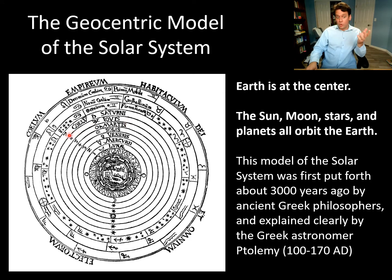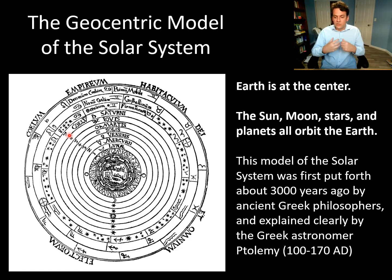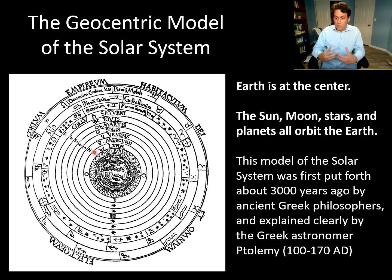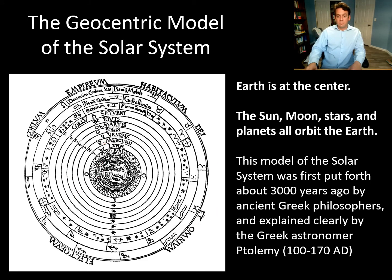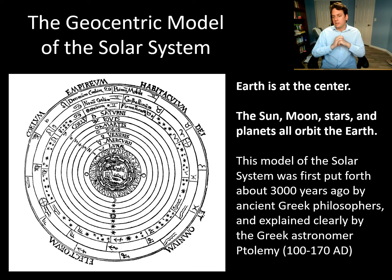A lot of thought went into this earliest semi-complete model of the solar system — a geocentric model formally put forth about 3,000 years ago by ancient Greek philosophers. In the simplest version, the Earth is at the center, and the sun, moon, stars, and planets all orbit around it in perfect circles. Circles were considered the most perfect shape, and celestial objects were deemed idealized, perfect objects — so philosophically it made sense they'd travel in circles.